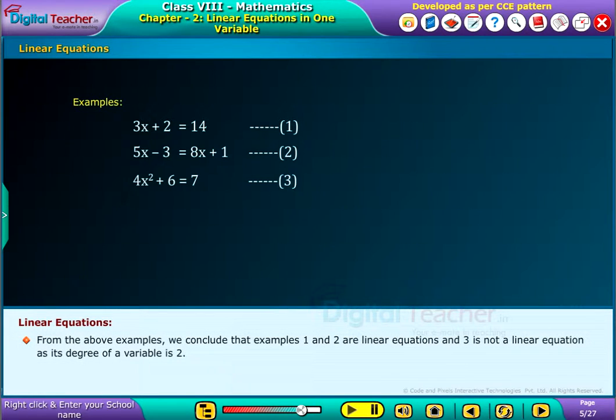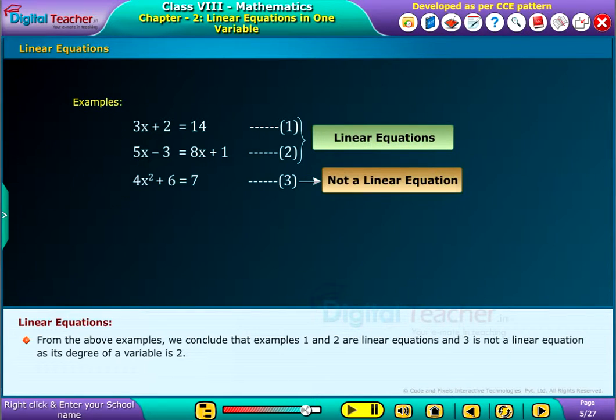From the above examples, we conclude that examples 1 and 2 are linear equations and 3 is not a linear equation as its degree of a variable is 2.